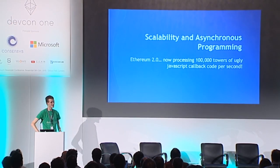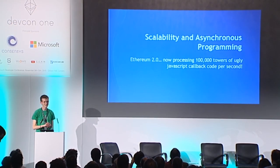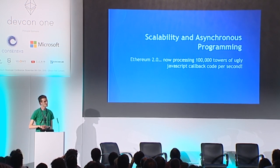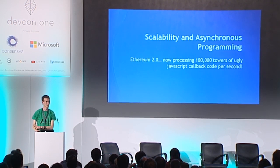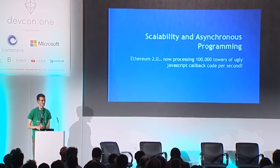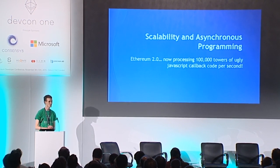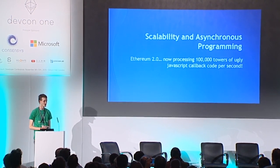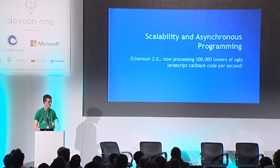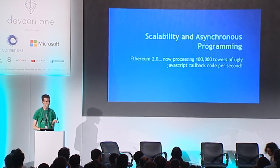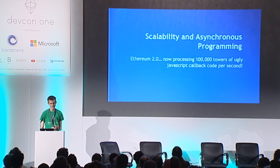What I'm planning on talking about today is basically scalability, and particularly some of the more detailed implications that this is going to have for how Ethereum developers are going to write their contracts. We've already talked about scalability quite a lot this morning — Casper, consensus problems, and some of the issues that making Ethereum scale is necessarily going to entail.